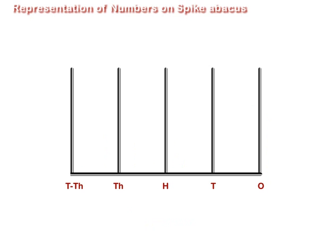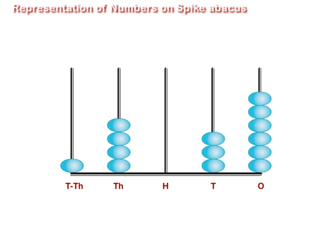Now let us write the number represented in this Spike Abacus. It has one bead in the ten thousands spike, four beads in the thousands spike, no bead in the hundreds spike, three beads in the tens spike, and six beads in the ones spike.